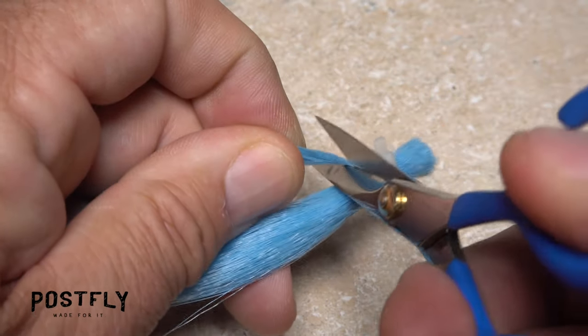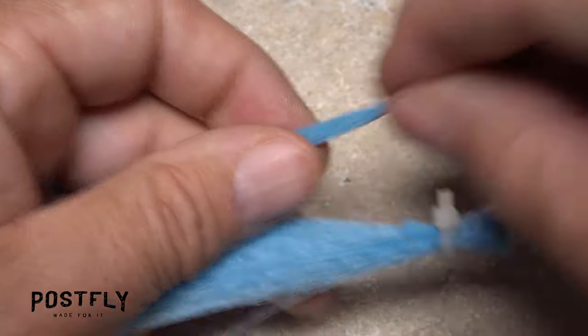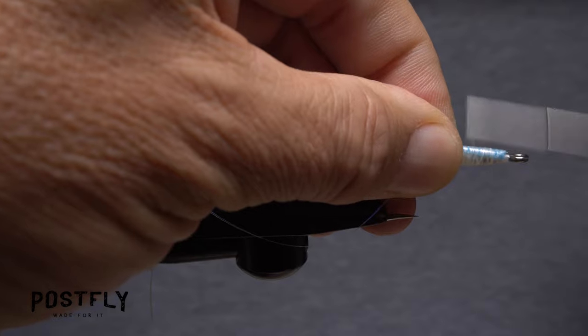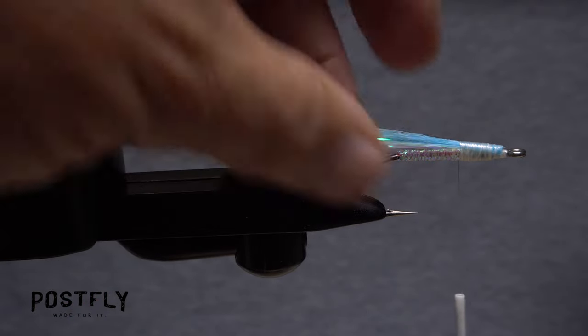Now snip about the same amount of blue faux bucktail free from the hank, then measure, trim, and tie in the material as you did before. The fly should now look something like this.